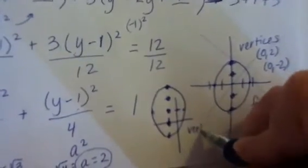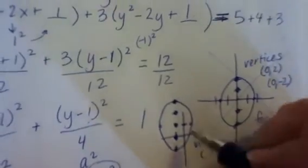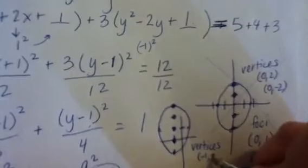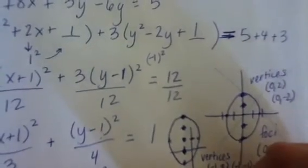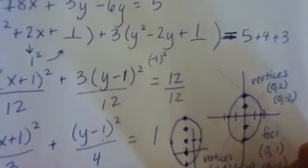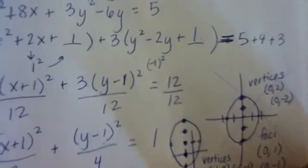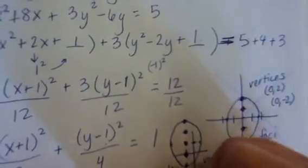So I'm going to have to write kind of small, so I'm trying to zoom in here. Vertices at negative 1, 3 and negative 1, negative 1. And then our foci are going to be located at negative 1, 2 and negative 1, 0. And then, of course, the center, if they want us to give that,